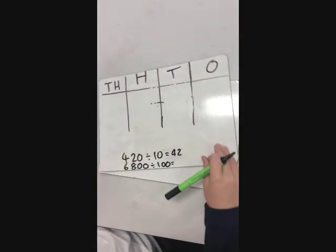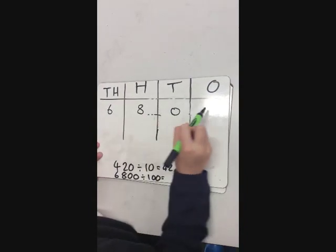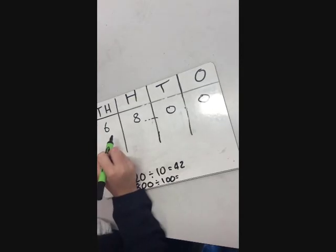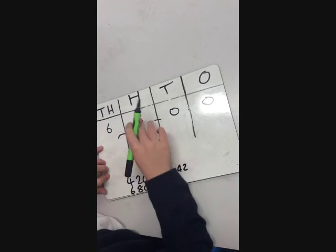And now 6800 divided by 100. They need to go down a column again, so it would be 680.